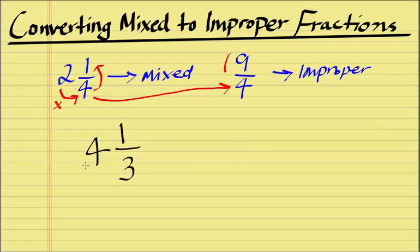First what we need to do is multiply the 4 by the 3 which is 12 and then we add the numerator 1. 4×3 is 12 plus 1 is 13 and then we carry over the original denominator which is 3.